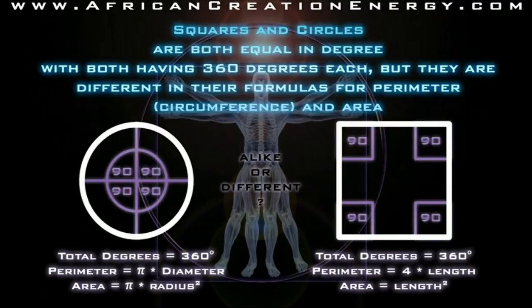The formula for perimeter of the circle is pi times the diameter and the formula for area of the circle is pi times the radius squared. The formula for the perimeter of the square is 4 times the length and the formula for the area of the square is the length squared.